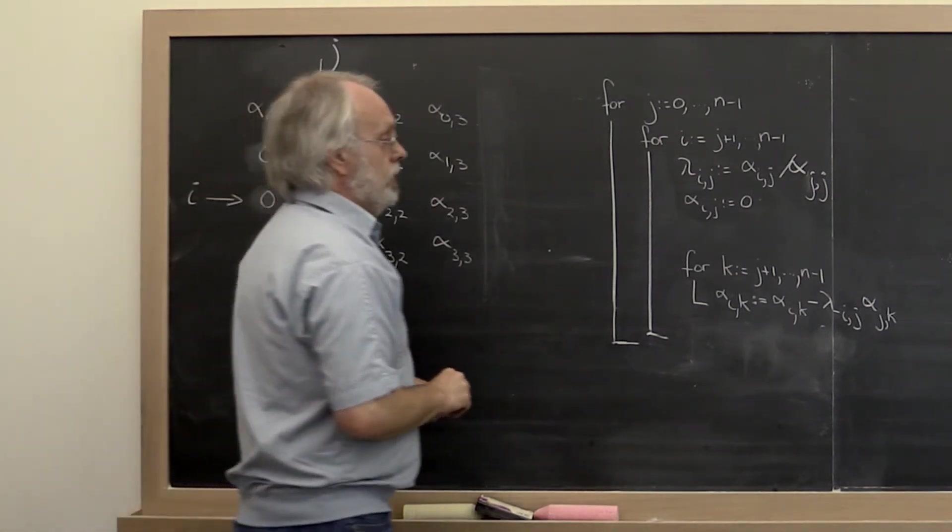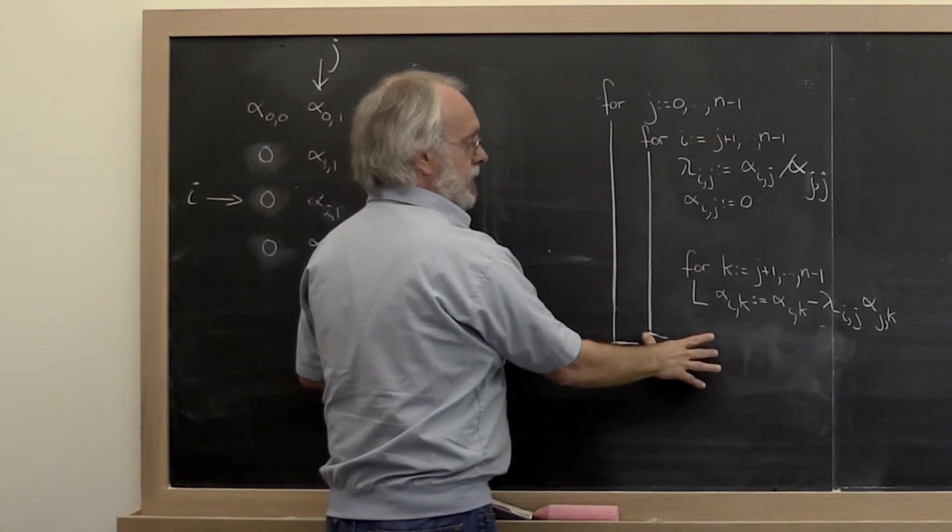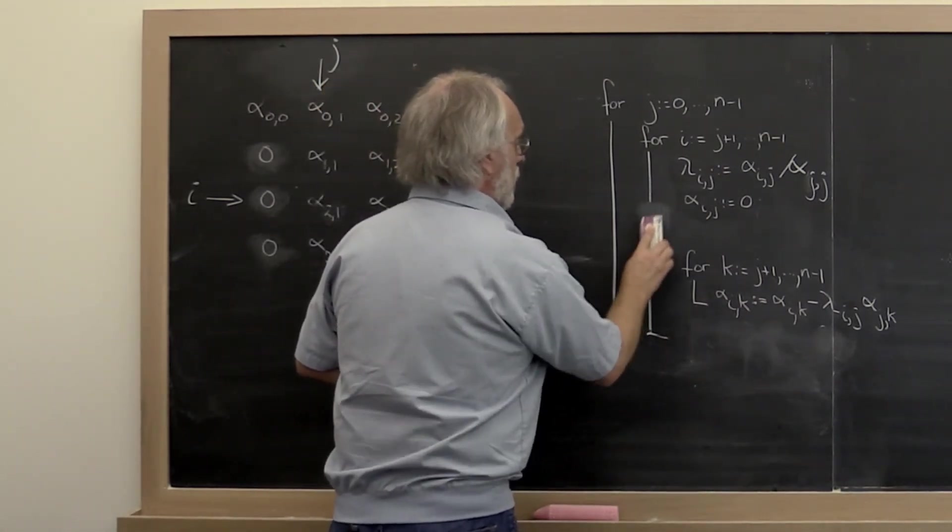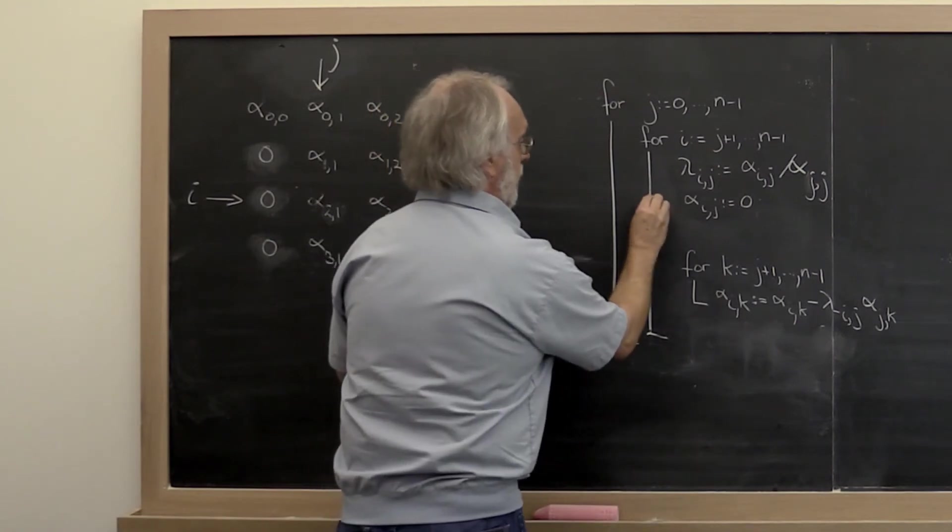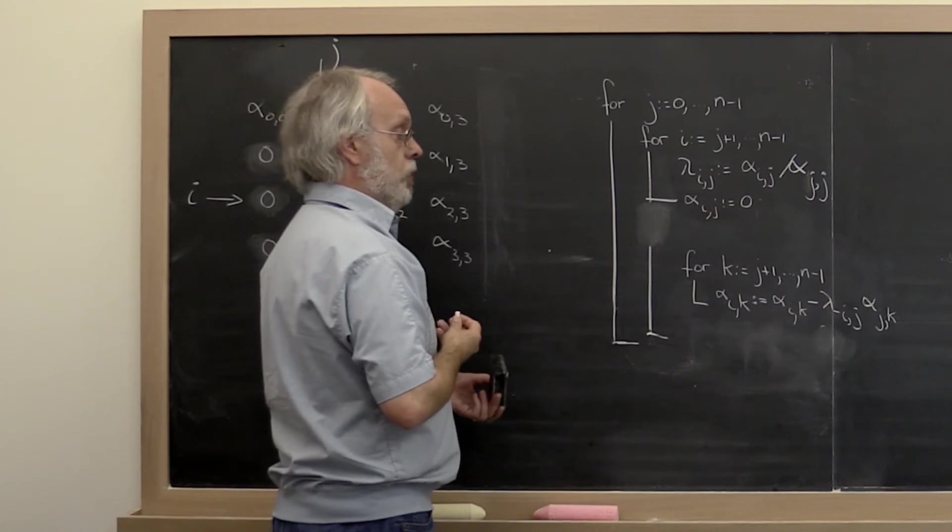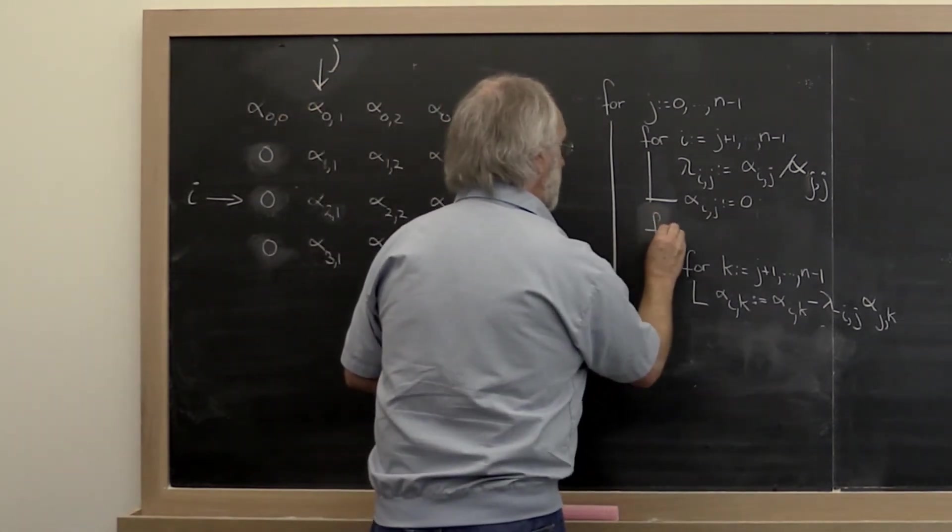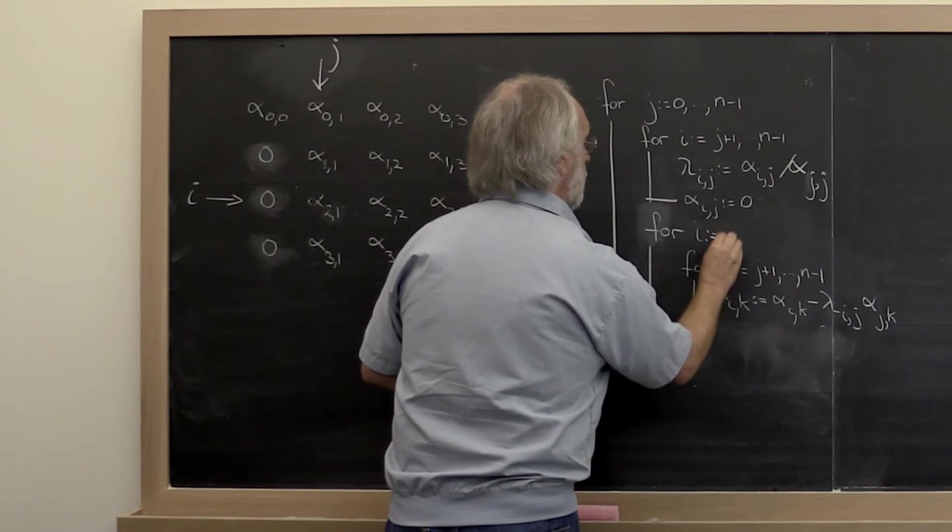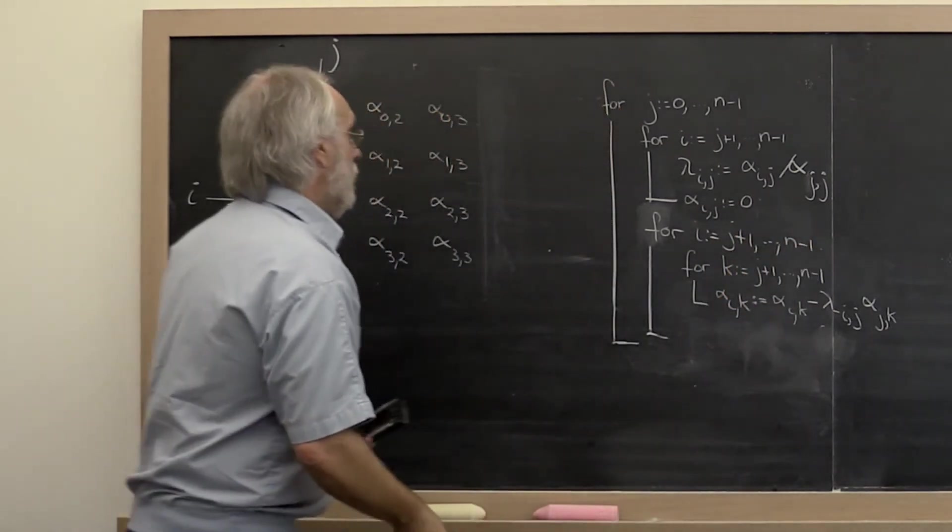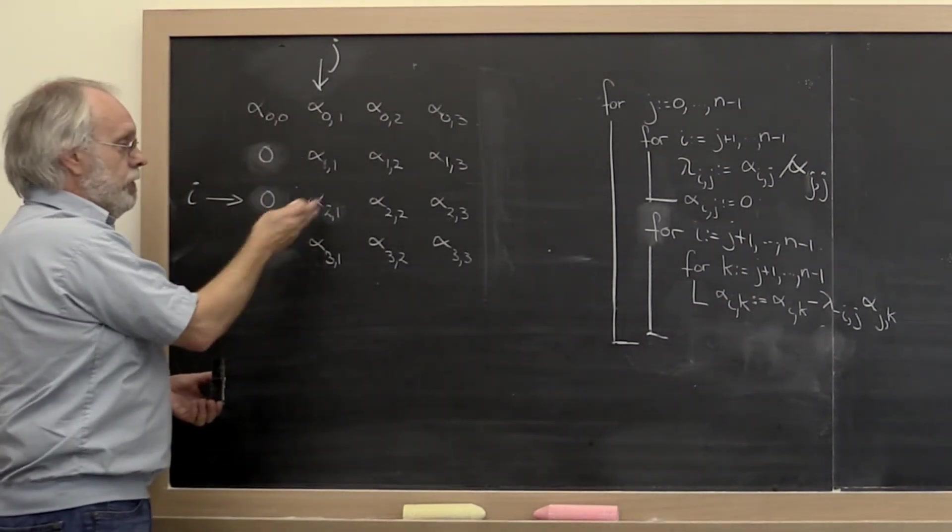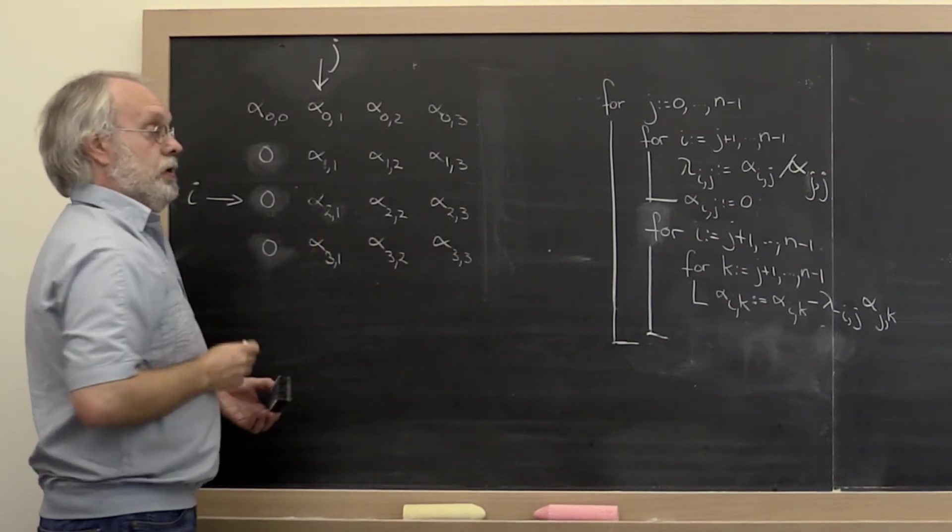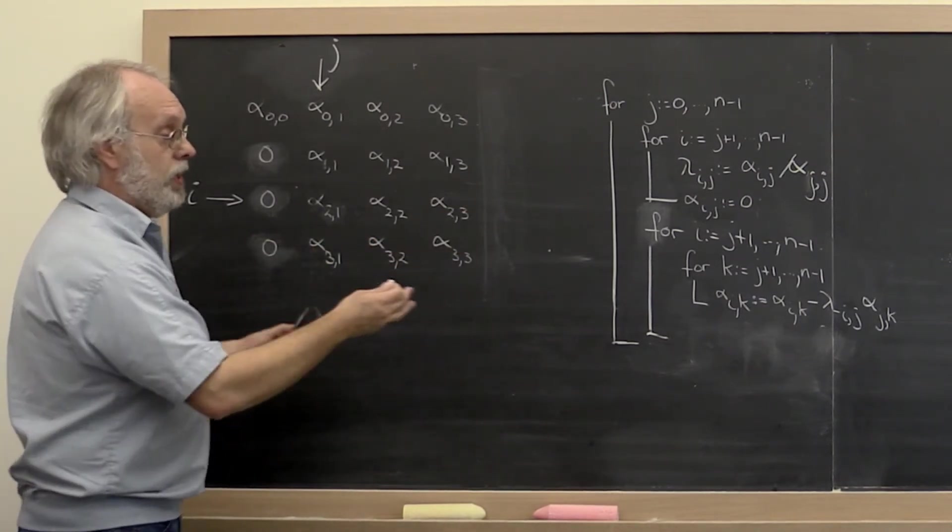What that means is that we take this loop right here and split it in two, where we first compute all of the multipliers and set the corresponding elements to 0. Then we create a second loop which marches over all of the rows and updates all of the entries to the right of the current column.